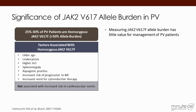Patients with high allele burden may have leukocytosis, higher hematocrit, more splenomegaly, more symptoms, and a higher risk of transformation — in general, more aggressive disease. However, they do not have a higher incidence of cardiovascular events, which is the main target for therapy. Therefore, at this point in time, measuring the JAK2V617F allele burden has little value for the management of PV patients.